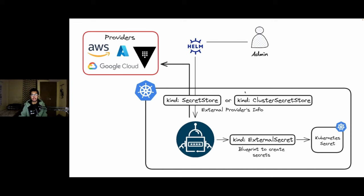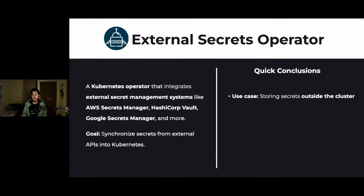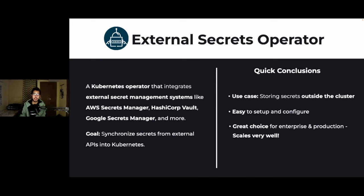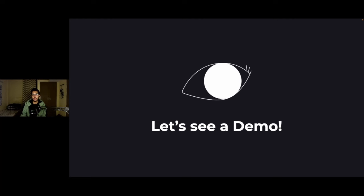Two important points: the secret store custom resource is namespace-scoped, meaning you specify the exact namespace where you want to authenticate the provider. If you don't want that restriction, you can use the cluster secret store, which is globally scoped and accessible from all namespaces — a common gateway between your Kubernetes cluster and the secrets provider. The number one highlight of the external secrets operator is that it's a great choice for enterprise and production-grade systems. It doesn't pose challenges when scaling your infrastructure, and I've actually seen it used in production.